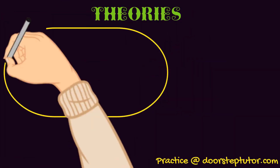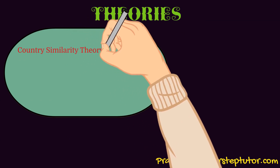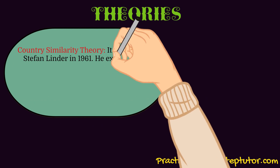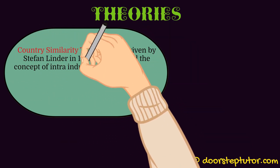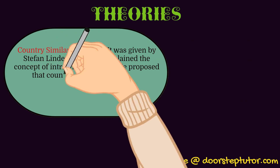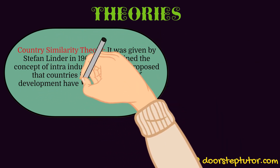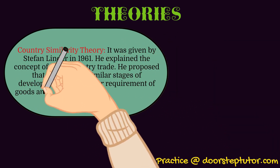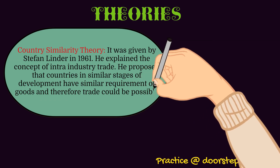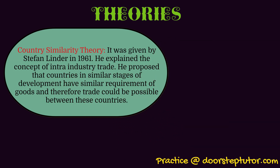The first one is the Country Similarity Theory. It was given by Sir Stephen Linder in 1961. He basically explained the concept of intra-industrial trade. He said that if two countries are similar — that is, they are in similar stages of development, having the same requirement of goods and services, let's say they are both developing countries, both Asian countries, neighbors — then trade can be possible between these countries. This theory focuses on intra-industrial trade.